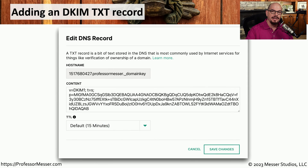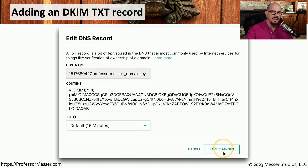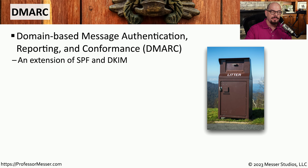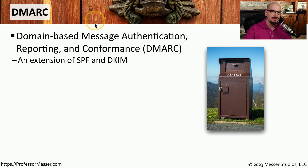Because the DKIM information is also added to a DNS text record, it's the same process as adding an SPF record. You put in the hostname information, the content which is the public key for this record, and then save the changes into your DNS. When you send an email to a third party, they're able to validate both the SPF and DKIM information and feel comfortable the email really did originate from you. But what if the SPF and DKIM information did not properly validate? What process should the receiving email server take with that particular email?